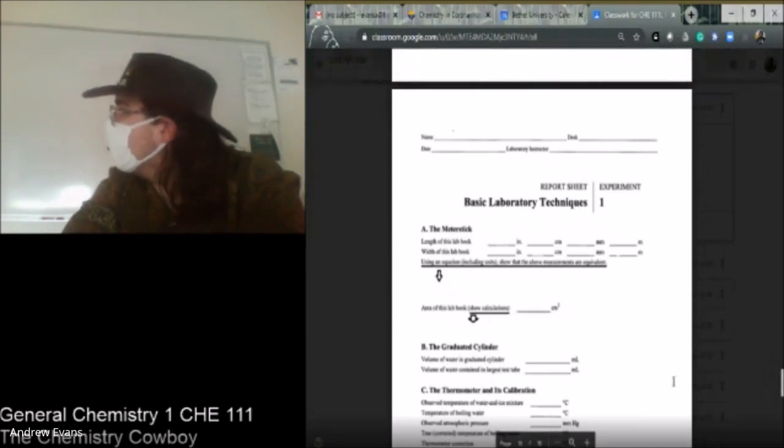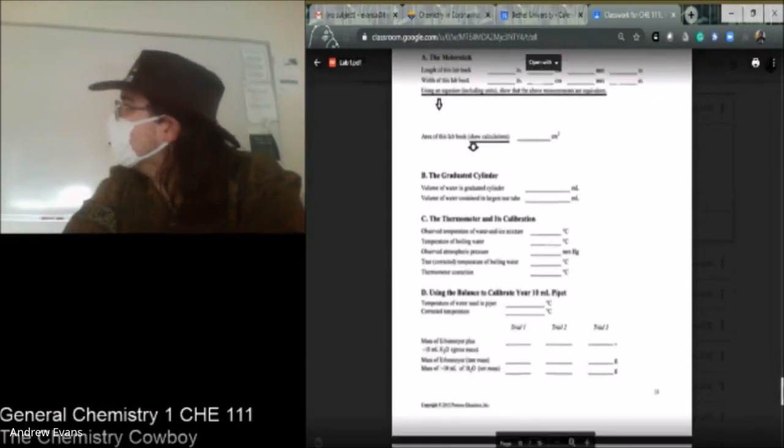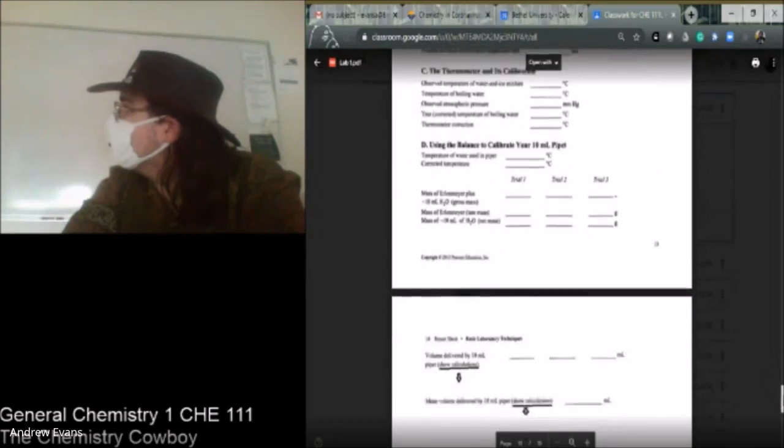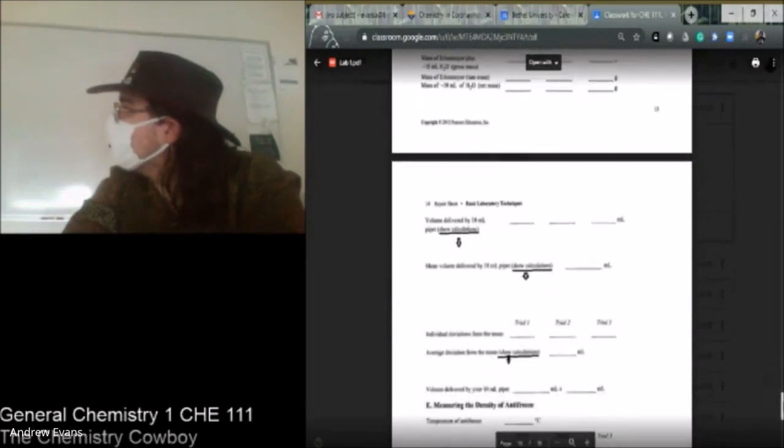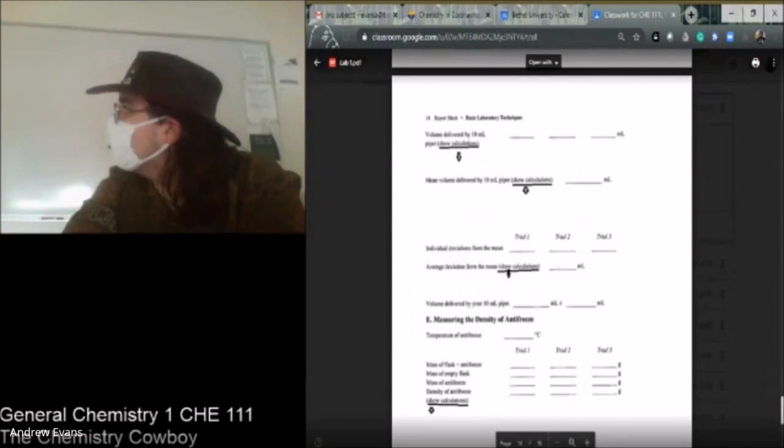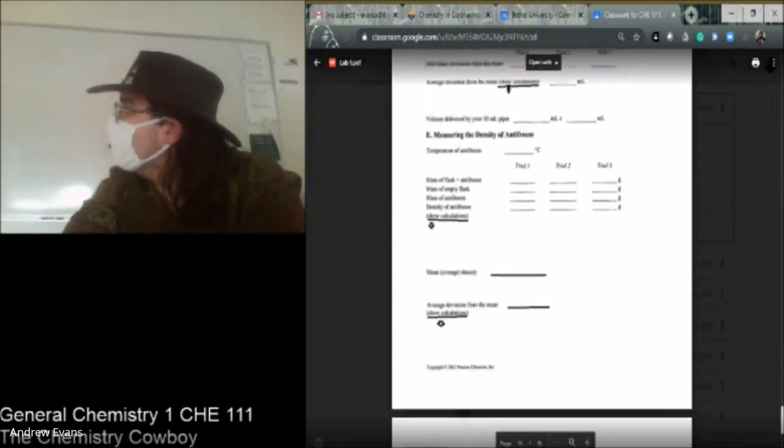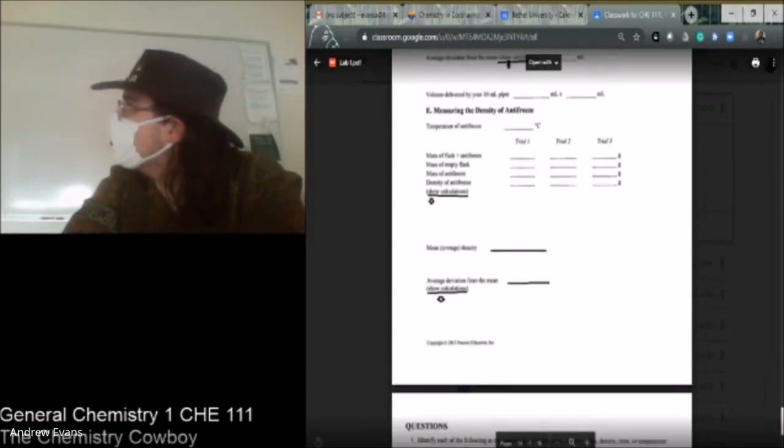And then part B, there's the two things of part B. Thermometer. I'm filling in this, filling in this. Show work here. Show work here. I tried to underline and put arrows in to hint where work should go.